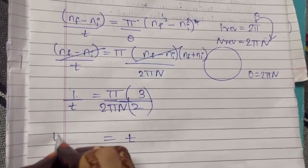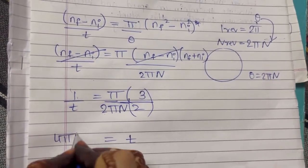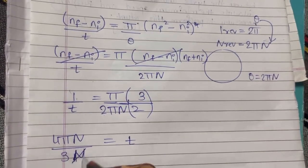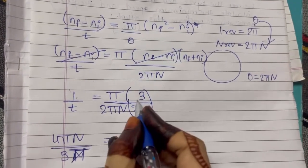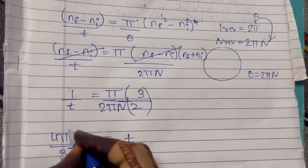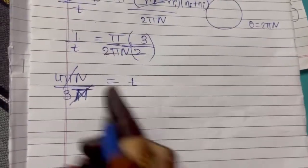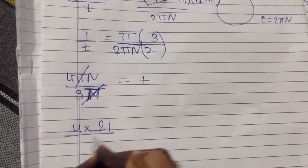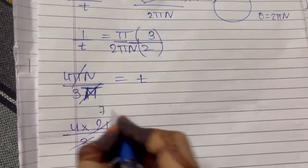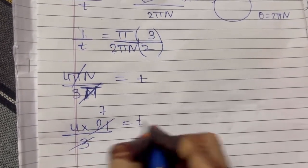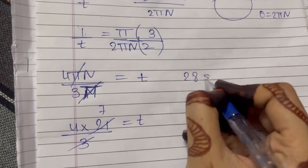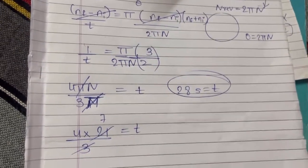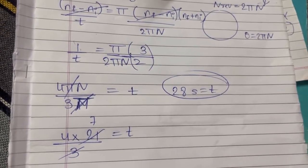Substituting the values: t = (2 × 21) / (0 + 3/2) = 42 / (3/2) = 42 × 2/3 = 28 seconds. The π terms cancel, and 4 sevenths of 28 gives us 28. So the fan will stop after 28 seconds.